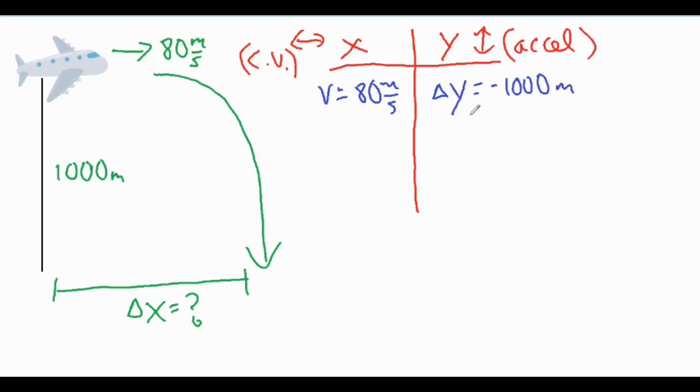Now a couple other things we can add in this column are the acceleration due to gravity, which is negative 9.8 meters per second squared.